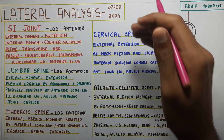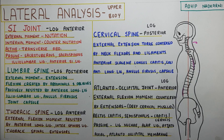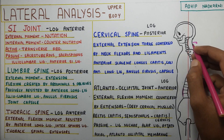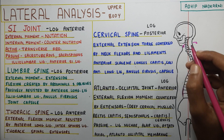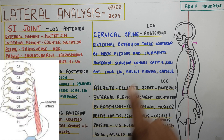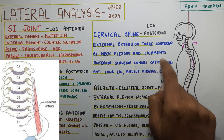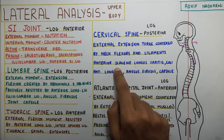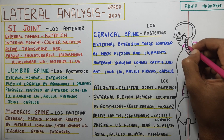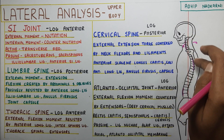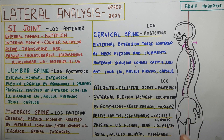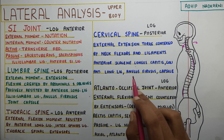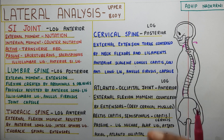Going on to the cervical spine, the line of gravity again goes posteriorly, which creates an extension movement. This will be countered by all your cervical flexors — your anterior scalene, longus capitis, and longus colli. The passive structures include your anterior longitudinal ligament. You can see the anterior-posterior-anterior-posterior pattern, which was also present in the lower limb. Along with the anterior longitudinal ligament, there is the annulus fibrosis, joint capsule, and facet joint, which prevent this movement.